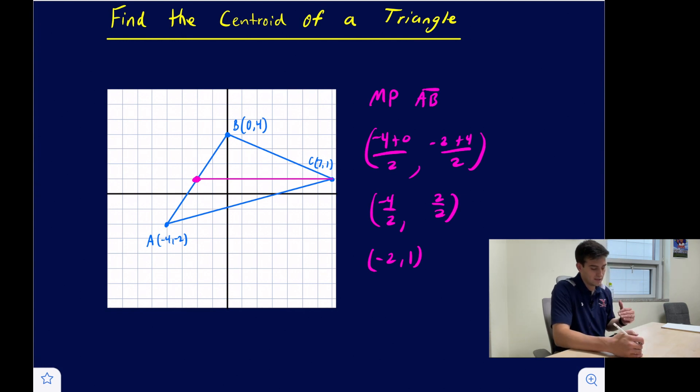So now this pink line that we have drawn here, this is a median. And so the centroid is located two-thirds of the way from the vertex C to the midpoint. So we don't have to find the other two medians. We can just use this one and we're going to count two-thirds of the way.